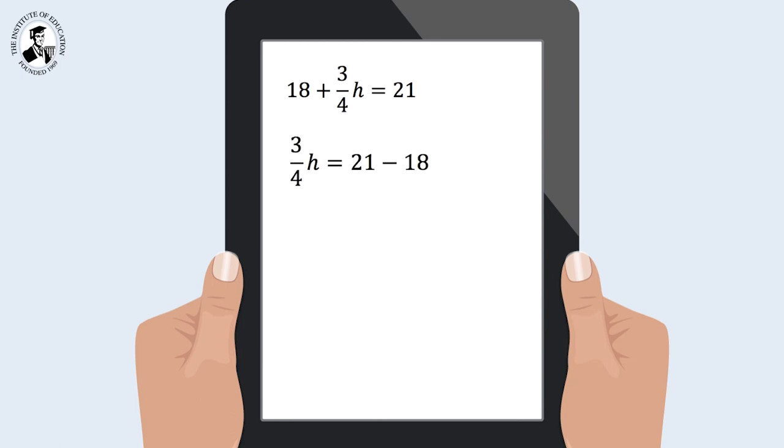Taking 18 from both sides, our equation becomes 3 quarters h is equal to 3. Dividing both sides by 3 quarters gives a height of 4cm for the cone.